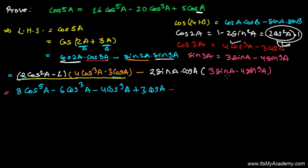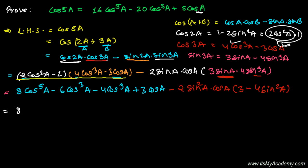One thing common here is sin a, so let's take sin a out as a common factor. We get 2 sin a cos a times (3 sin a − 4 sin³a). Taking sin a outside, this becomes 2 cos a times sin a times (3 − 4 sin²a). So combining, the next step gives 8cos⁵a minus (6cos³a + 4cos³a), that is −10cos³a, plus 3cos a, minus 2 sin²a cos a times (3 − 4 sin²a).